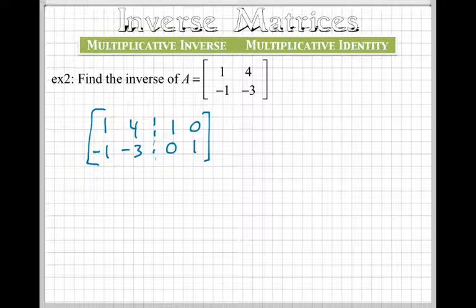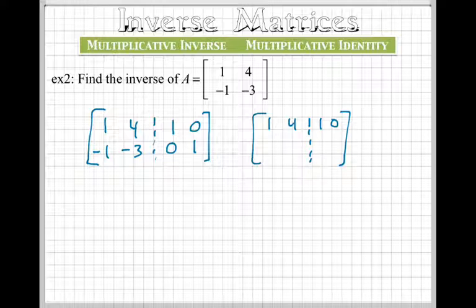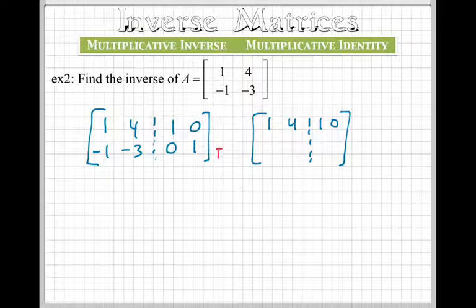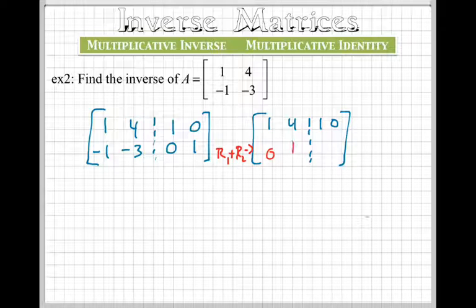So the top row stays the same, so I'm just going to write that out: 1, 4, 1, 0. And the bottom row is what changes. So we're going to take R1, the first row, add it to row 2 to get this guy. So that's going to be 0, 4 plus negative 3 is going to be 1, and then 1 plus 0 is going to be 1, and 0 plus 1 is going to stay 1.